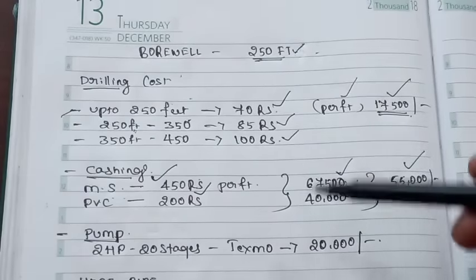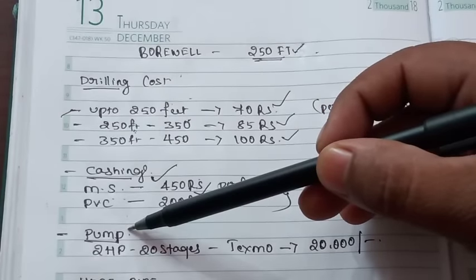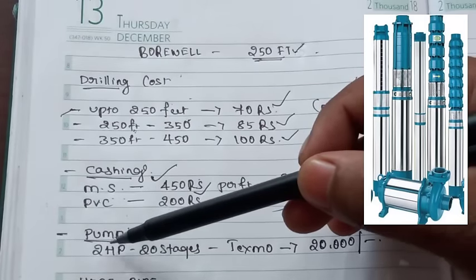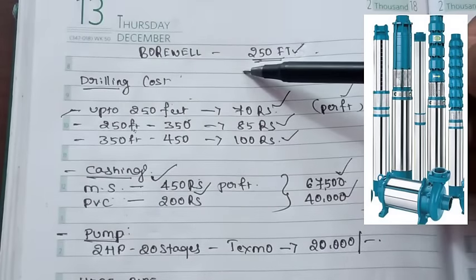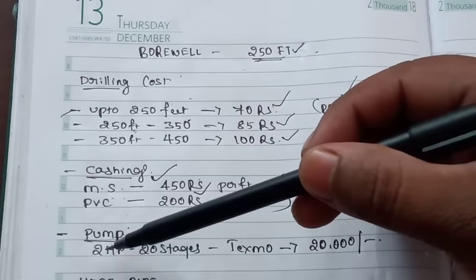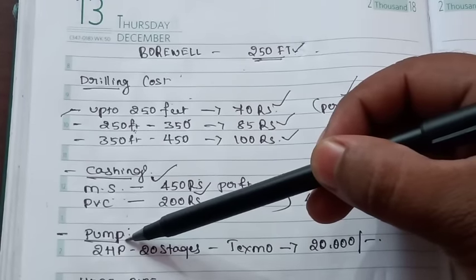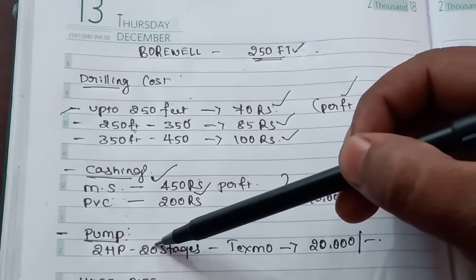Next is the pump set. For 250 feet, you'll need about 20 stages.